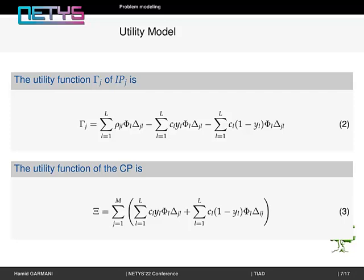The utility function of the content provider is the sum of payments received from all the infrastructure providers.